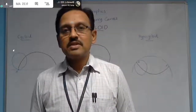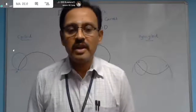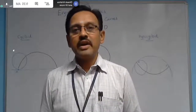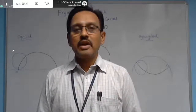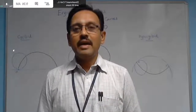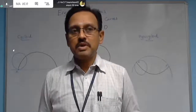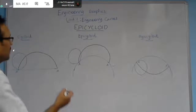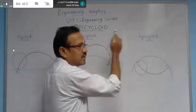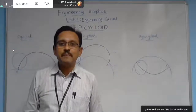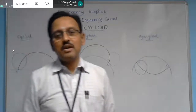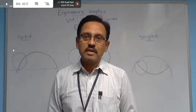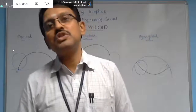In this class we will discuss the construction of an epicycloid. In previous classes we discussed the construction of various engineering curves. Engineering curves can be classified into two categories: conic curves and special curves. Under conic curves we discussed parabola, hyperbola, and ellipse. Special curves include cycloid, epicycloid, hypocycloid, and involute — involute of a circle, involute of a square, involute of any polygon.